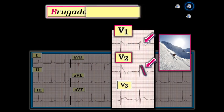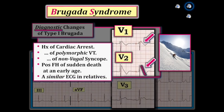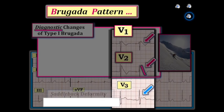This ECG is diagnostic of a type 1 Brugada pattern. Brugada syndrome is only present if, in addition to a diagnostic type 1 ECG pattern, there are also clinical features such as a history of cardiac arrest, polymorphic VT, non-vasovagal syncope, a positive family history of sudden death at an early age not due to acute MI, or a similar type 1 ECG pattern in a close relative. In contrast, the ST-T wave appearance in lead V3 is non-diagnostic.